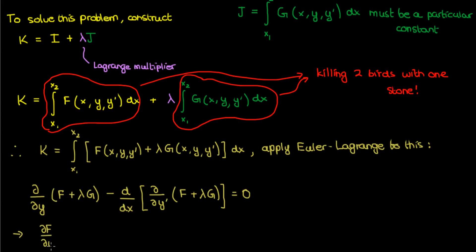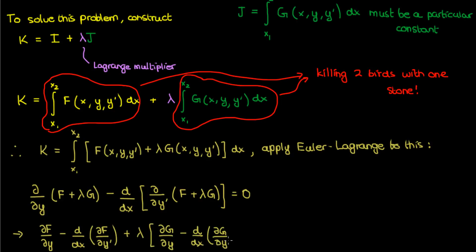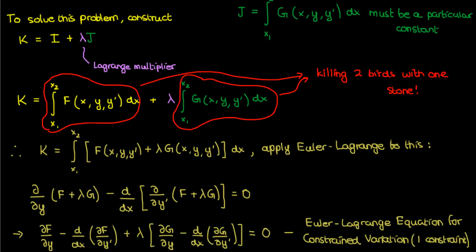Once we've constructed this functional, we directly apply the Euler-Lagrange equation to it. We take the partial with respect to y of (F + lambda*G) minus the derivative with respect to x of the partial with respect to y' of (F + lambda*G), set that equal to zero, and expand to get the Euler-Lagrange equation for constrained variation. All you do is add lambda times your constraint integral J to your original functional I, then apply the Euler-Lagrange equation on that combined package to get your desired function y.